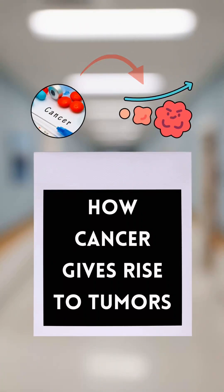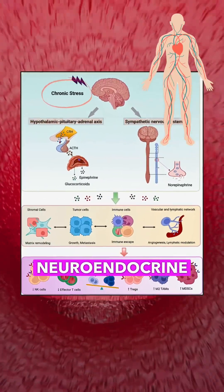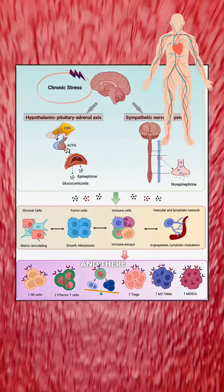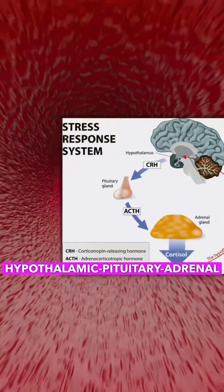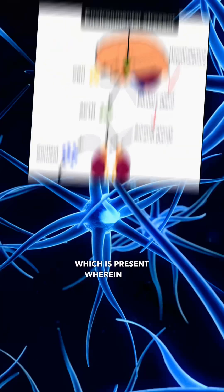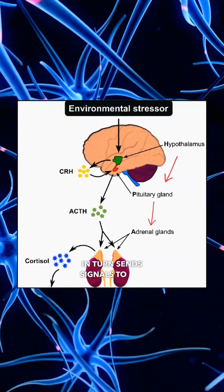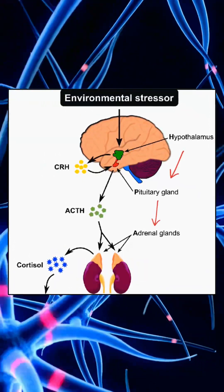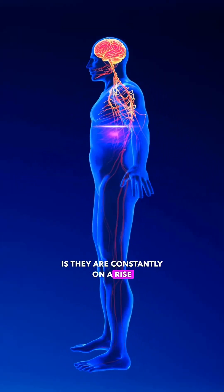Today I will talk in more detail about how cancer actually causes or gives rise to tumors. Primarily, chronic stress activates the neuroendocrine system, and there are two components to this: one is the sympathetic nervous system, and the other is the hypothalamic-pituitary-adrenal axis. The hypothalamus sends signals to the pituitary, which in turn sends signals to the adrenal glands, and that is how this axis is activated. When both of these are chronically activated — constantly on the rise — it has downstream effects.